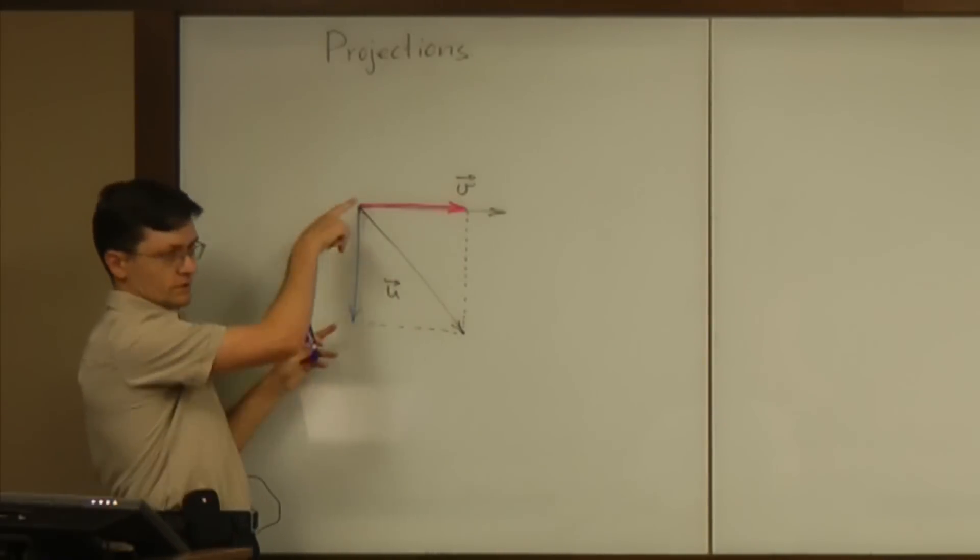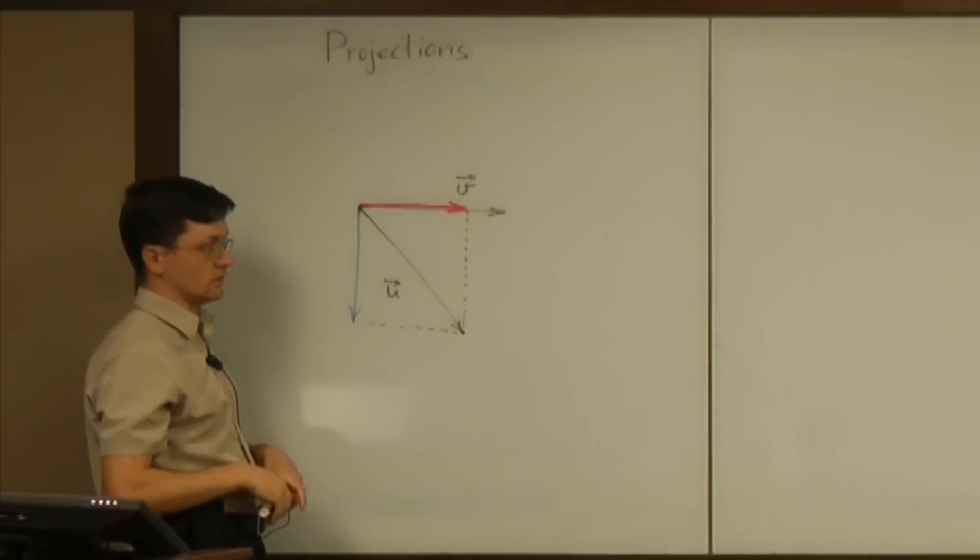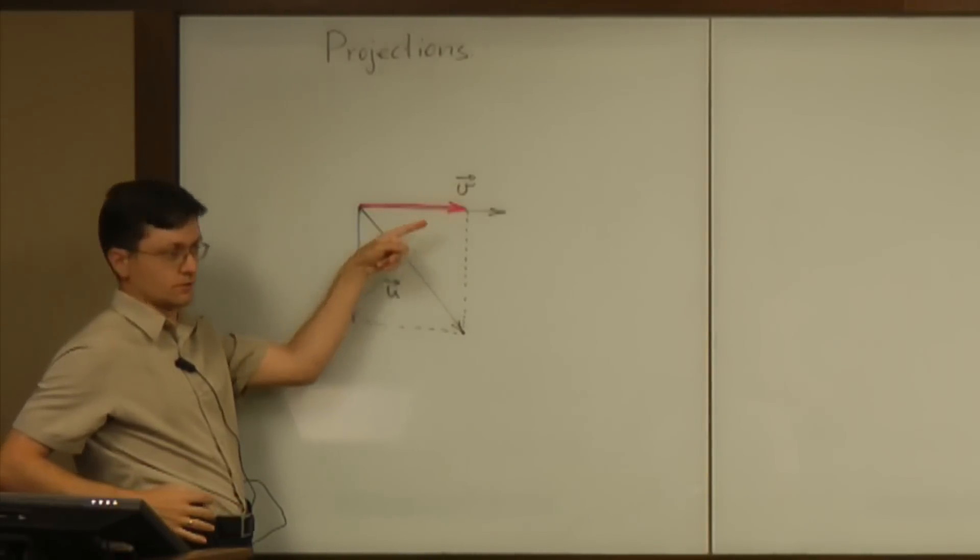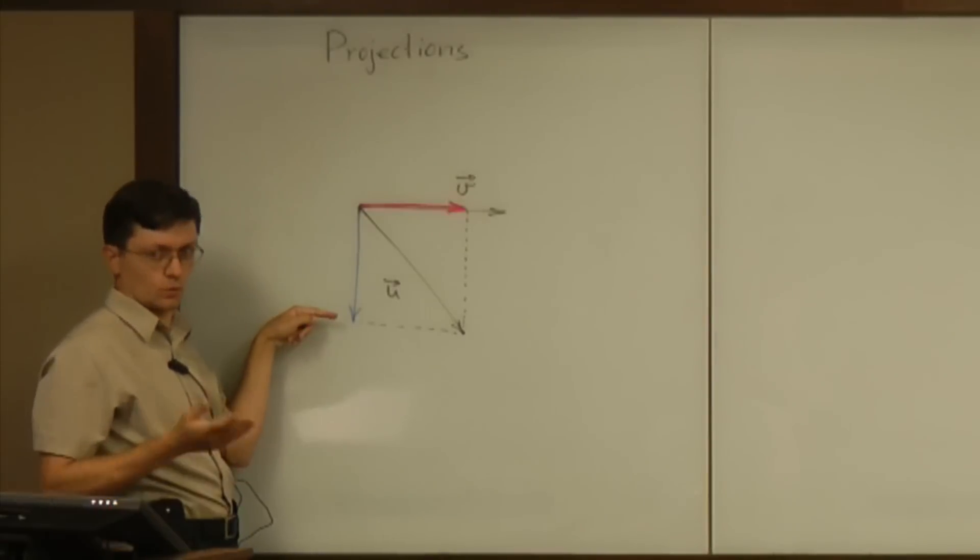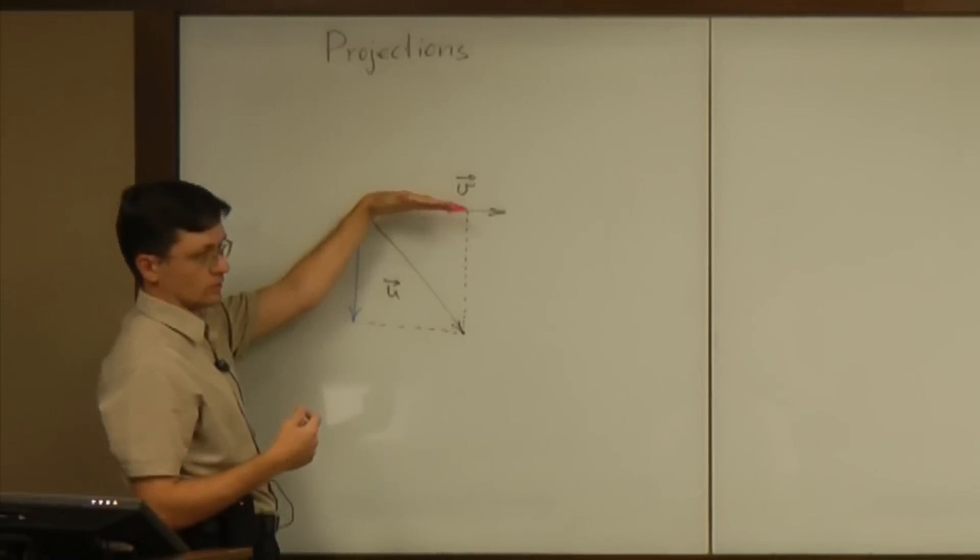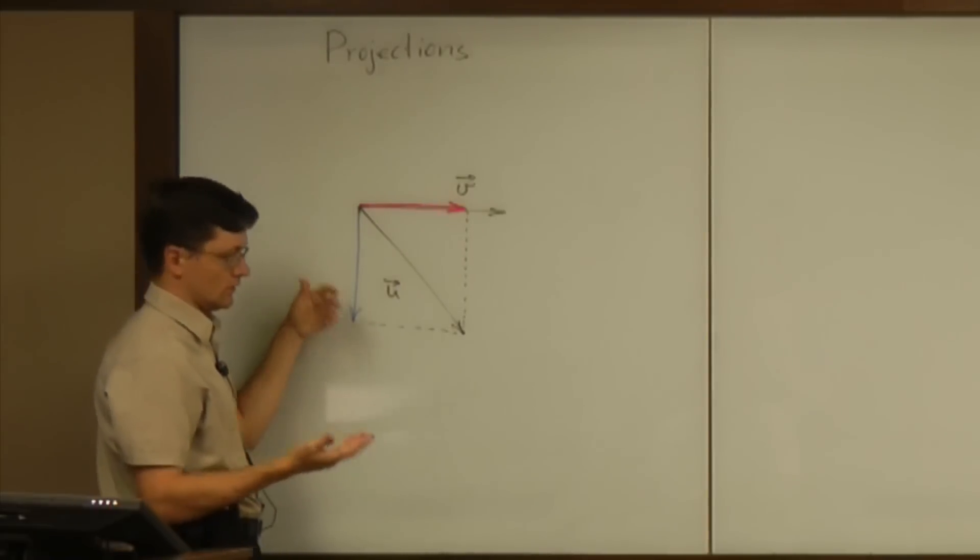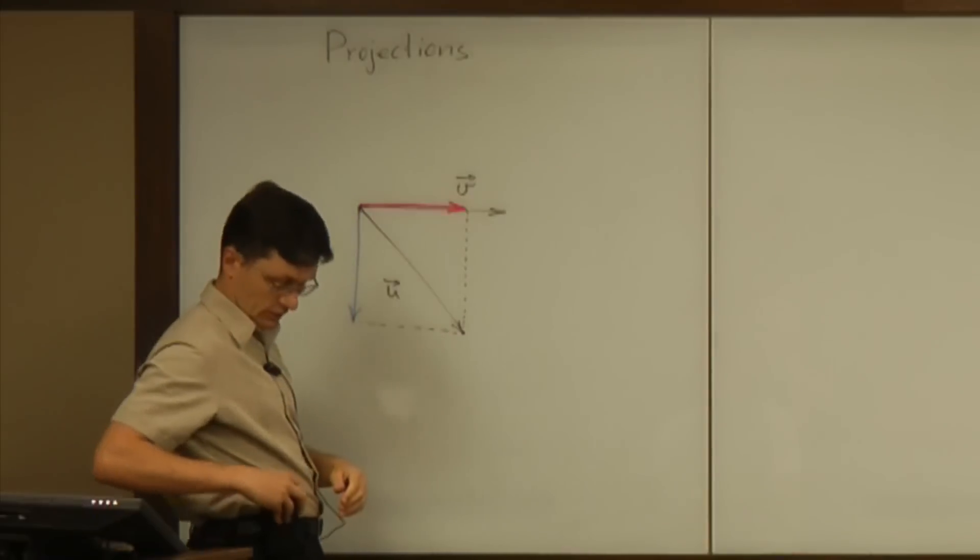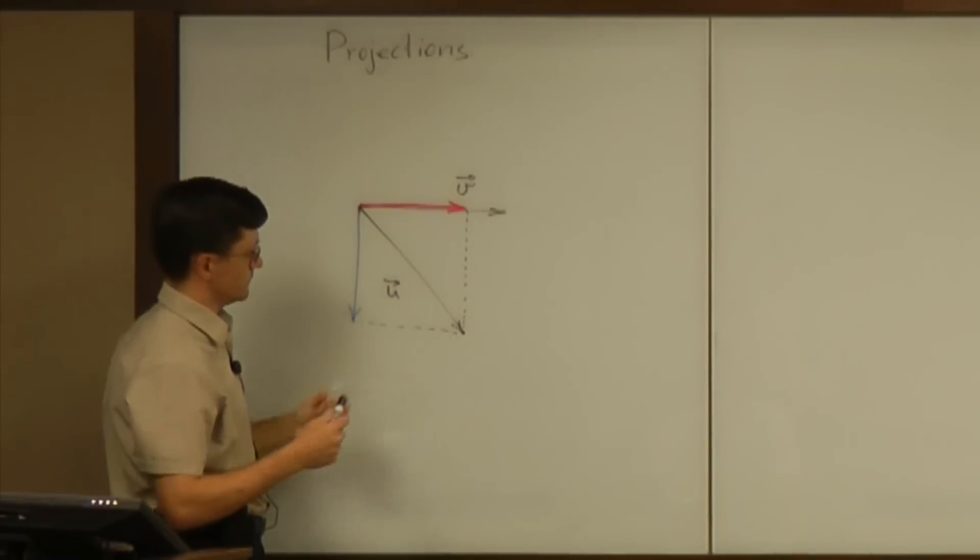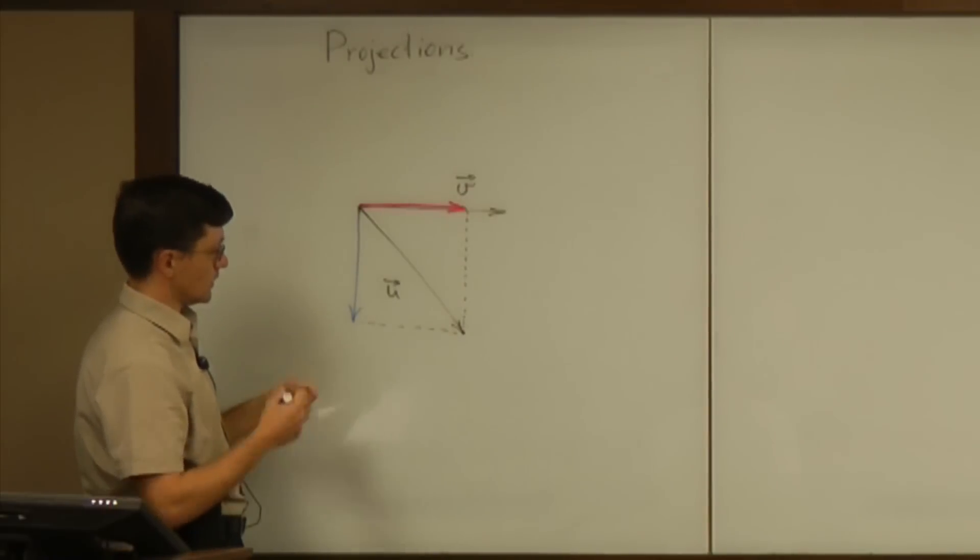So our force is decomposed into the sum of two vectors. One is highly useful for the purpose, the other one is total waste. And what we want is to maximize the useful one, minimize the waste. Sometimes we cannot make the waste zero, but that's the question of technical limitations.